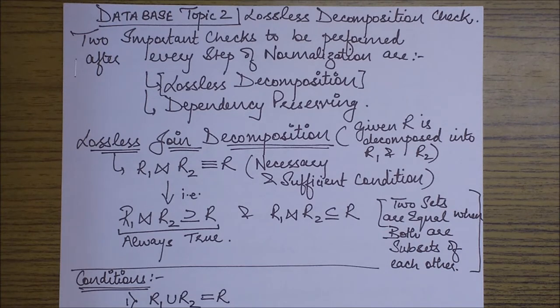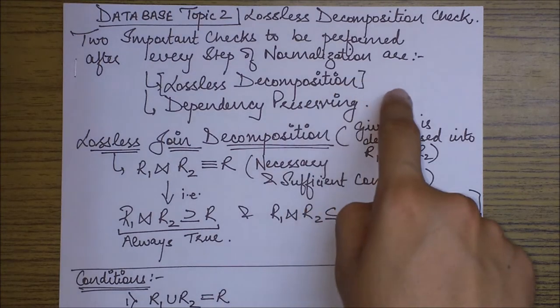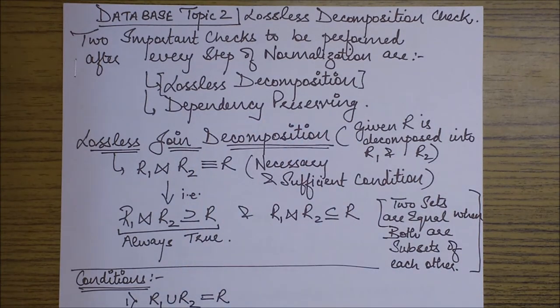So this lossless decomposition is a very important check and it is essentially performed after every normalization step in order to check that the normalization done was essentially a correct one or not. By a correct one, I mean that it should be lossless decomposition and it should be dependency preserving.